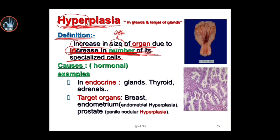When the number of the cells is increased, the organ increases in size. The important thing in hyperplasia is that the increase is in the number of cells, not the size of the cell. When the number of cells in the organ increases, the organ grows in size. So hyperplasia is an increase in the number of specialized cells that leads to an increase in organ size.